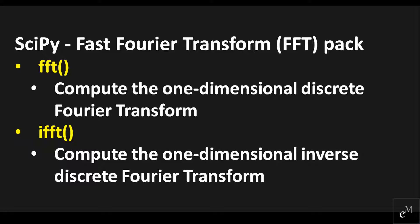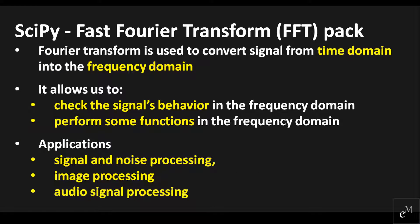In this video, we will use SciPy's Fast Fourier Transform pack to show you how to compute the one-dimensional discrete Fourier transform and also the inverse discrete Fourier transform. Just a bit of background on Fourier transform: it is used to convert a signal from the time domain into the frequency domain. By doing so, it not only allows us to check the signal's behavior in the frequency domain, but also allows us to perform functions such as filtering that would otherwise not be possible in the time domain. Because of such powerful capability, Fourier transform finds its application in disciplines such as signal and noise processing, image processing, and audio signal processing. SciPy offers a Fast Fourier Transform pack that allows us to compute the Fast Fourier Transform.